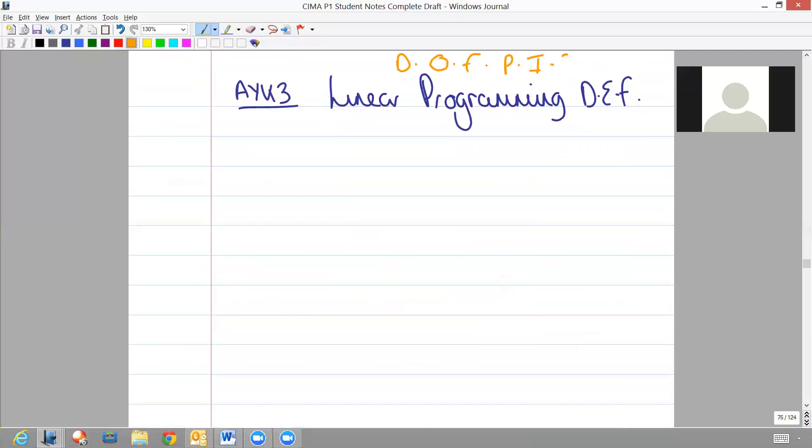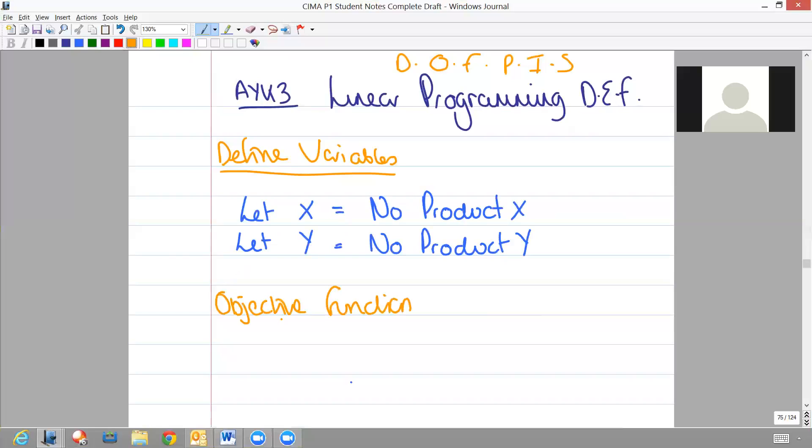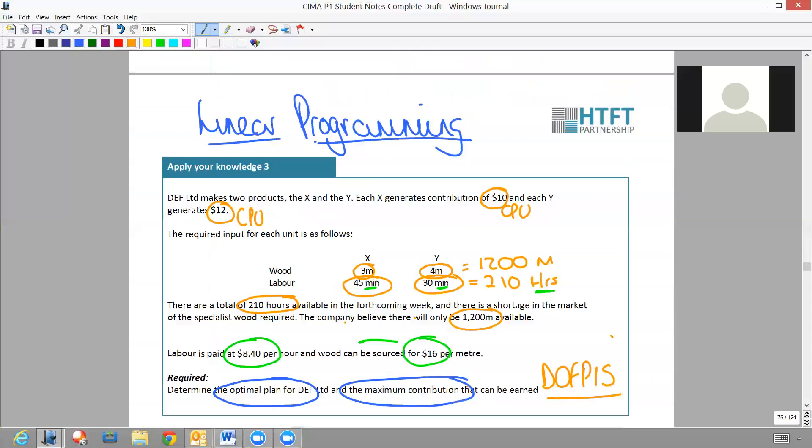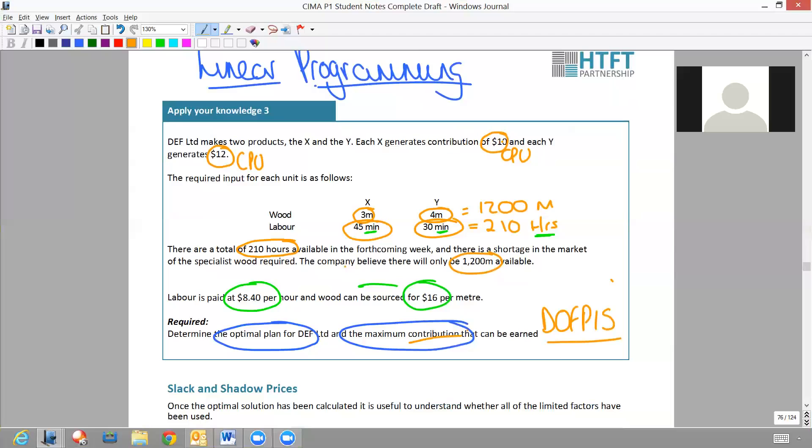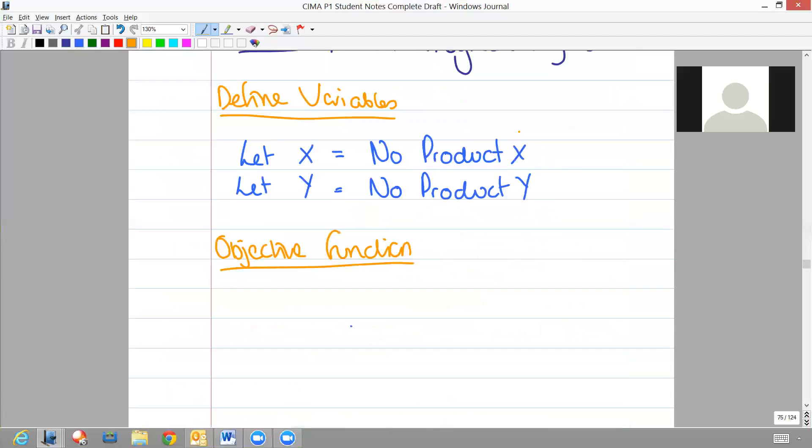Let's have a look then at how we go about answering this question, remembering then to use DOFF PIES to help you along and starting with defining the variables. So when we define the variables for this particular one, we've already got products named X and Y, but for good practice I'm writing it down as a reminder. So X in my calculations will represent the number of product X and Y will represent the number of product Y. Step two then, we need to state our objective function. What is it that we're trying to achieve? Well, we're trying to achieve maximization of contribution and we are told that we've got contribution of 10 for X and 12 for Y. Therefore, maximum contribution is going to be 10x plus 12y.